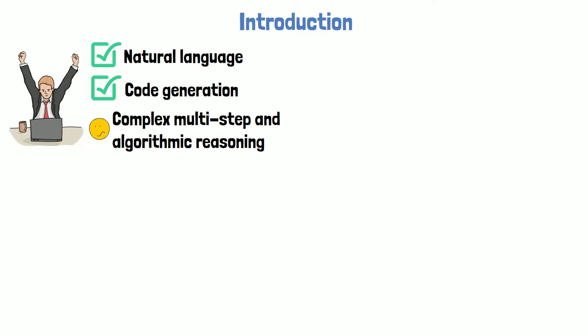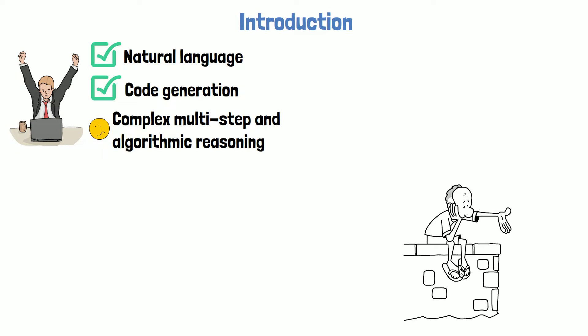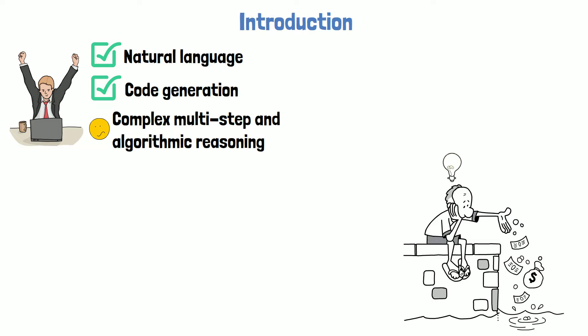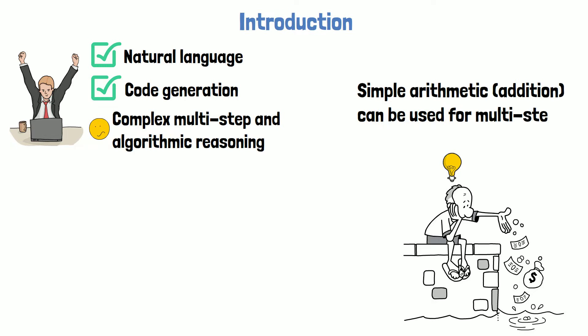To do research about algorithmic reasoning capabilities without pouring a significant amount of money, a common approach is to focus on simple arithmetic problems like addition, since addition of large numbers is a multi-step calculation.